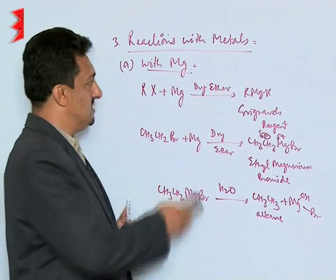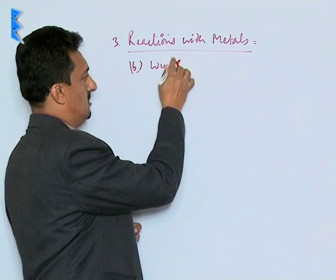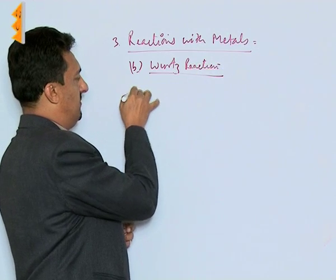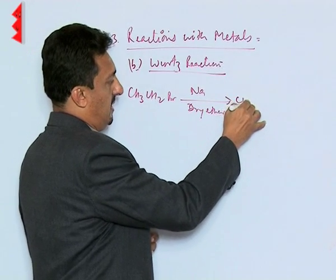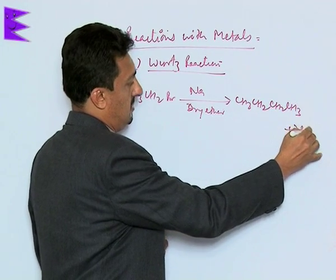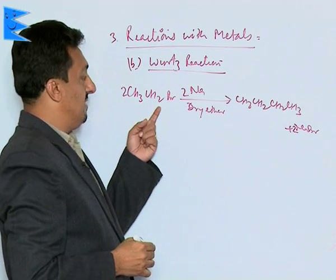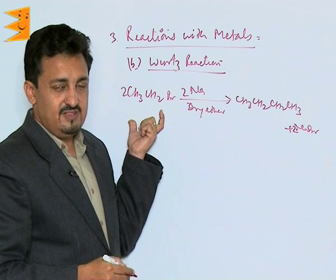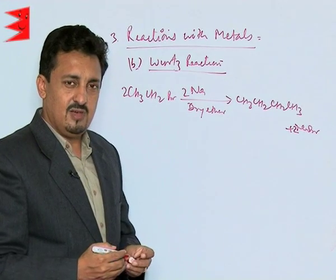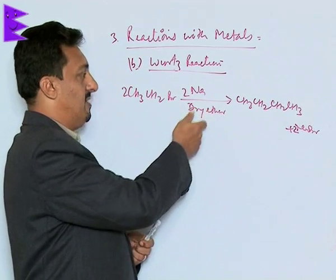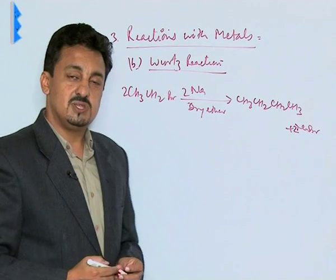The second reaction in this category is the Wurtz reaction, which you have also studied in class 11. Whenever any alkyl halide is treated with sodium in dry ether, the carbon chain of the hydrocarbon is doubled. A limitation of this reaction is that methane or odd-carbon alkanes cannot be prepared this way. The reaction follows a free radical substitution mechanism, where alkyl free radicals substitute the alkyl halides to form the double-chain product.